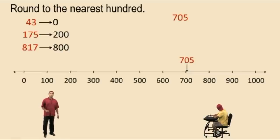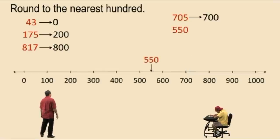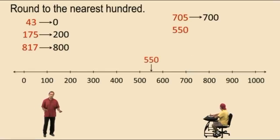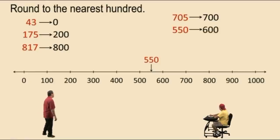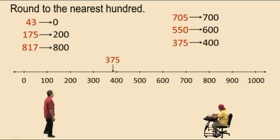705 is between 700 and 800. It's really close to 700, so 705 rounds to 700. 550 is right in the middle of 500 and 600 — when we're in the middle we round up, so 550 rounds to 600. 375 is between 300 and 400 but it's closer to 400, so 375 rounds to 400.